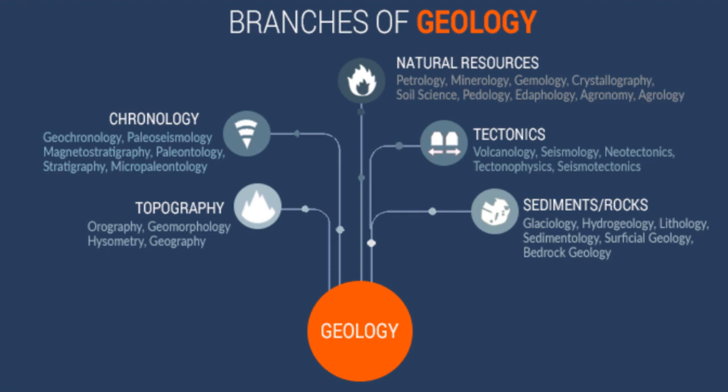We also have natural resources, which includes all fields of science that govern the raw materials and resources we use for our technology and for humans to survive. We have petrology, the study of rocks; mineralogy, the study of minerals; and agronomy, which talks about how the field of agriculture involves science such as crop production, biotechnology and soil science.